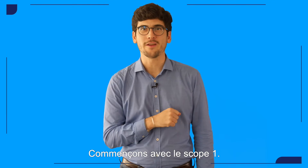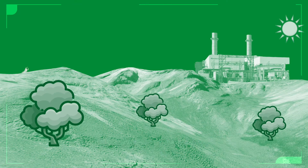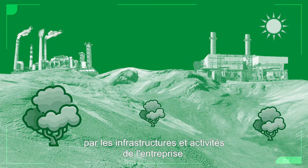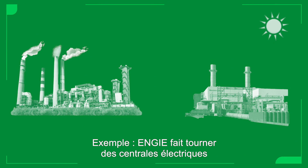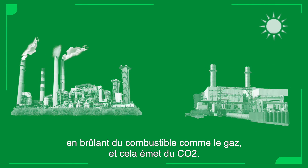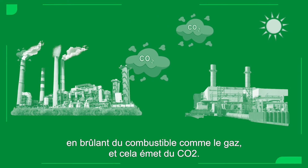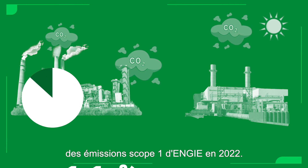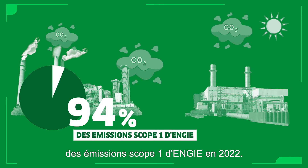So let's start with Scope 1. This includes all emissions generated directly by the company's infrastructures and activities. For example, Engie operates power plants that burn fuel, such as gas, and thus emits CO2. In fact, this made up 94% of Engie's Scope 1 emissions in 2022.